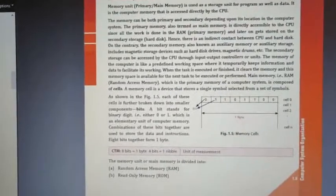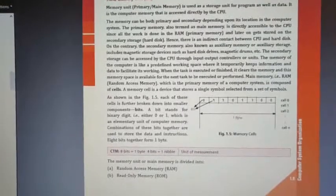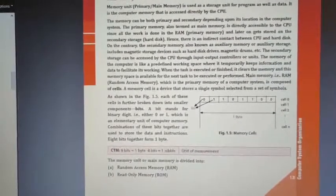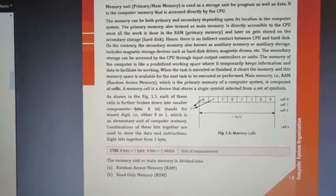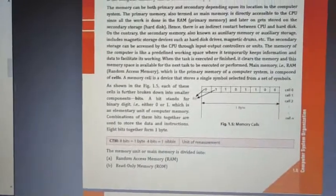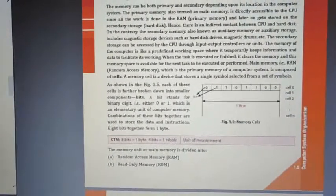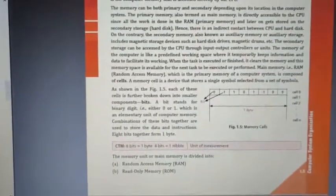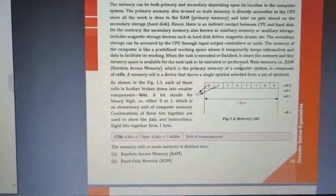Primary memory, also termed as main memory, is directly accessible to the CPU since all the work is done in the RAM, which is Random Access Memory. There are two types of memory: first is RAM and second is ROM. RAM stands for Random Access Memory and ROM stands for Read Only Memory.